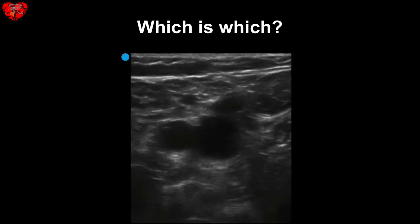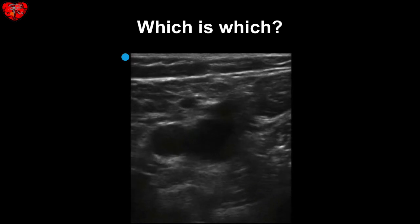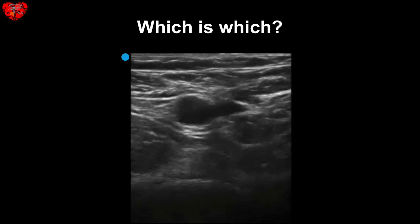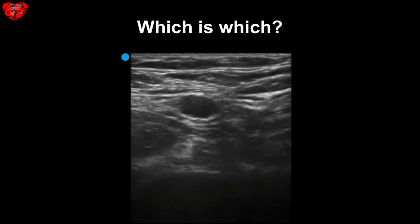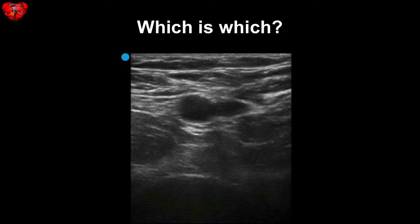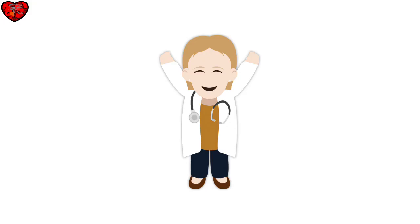Let's put it all together. Which is an artery and which is a vein? What do you think? The one on the right compresses and the one on the left looks round and has a thicker wall. This is the artery and this is the vein. Now you're an expert on telling the difference between an artery and a vein on ultrasound.